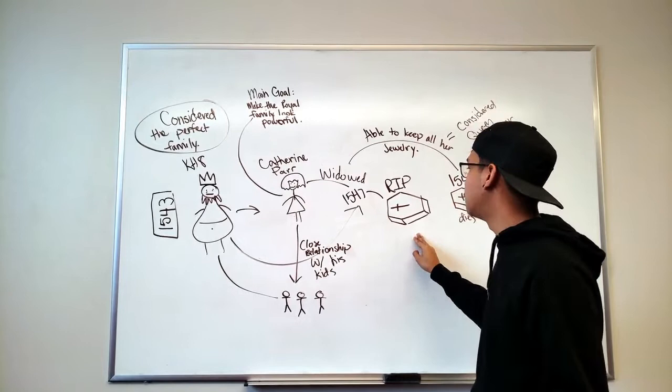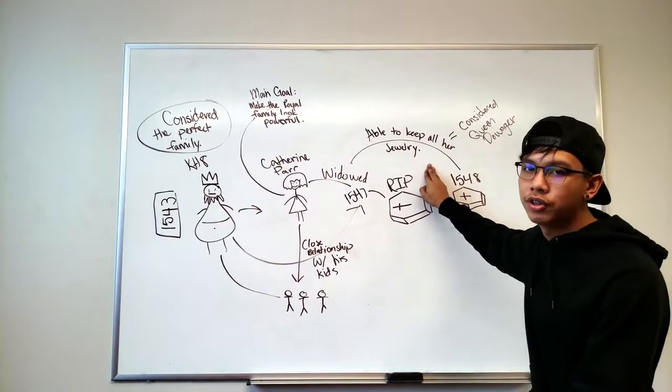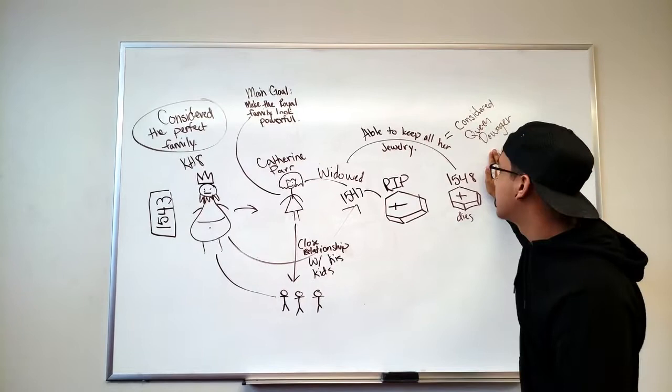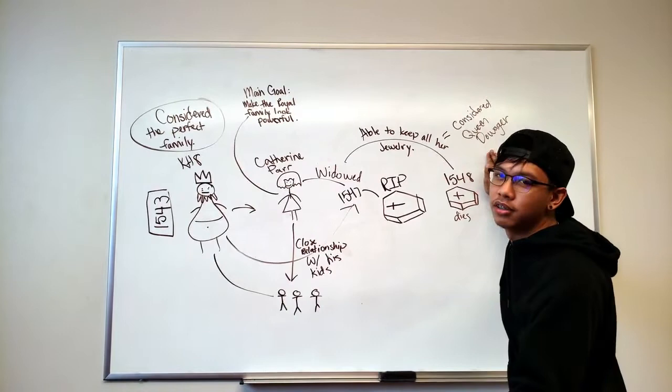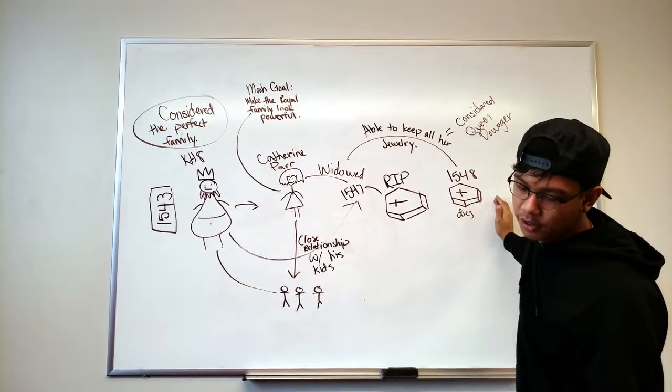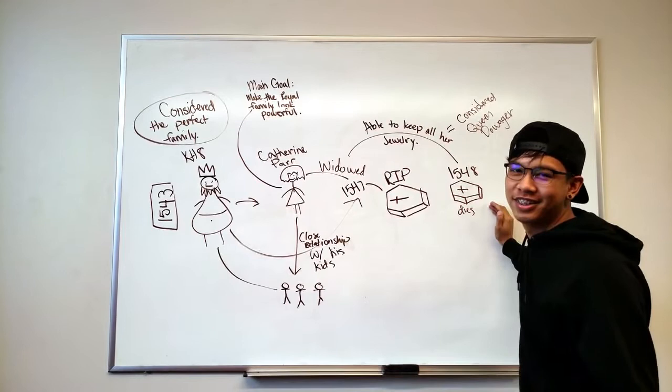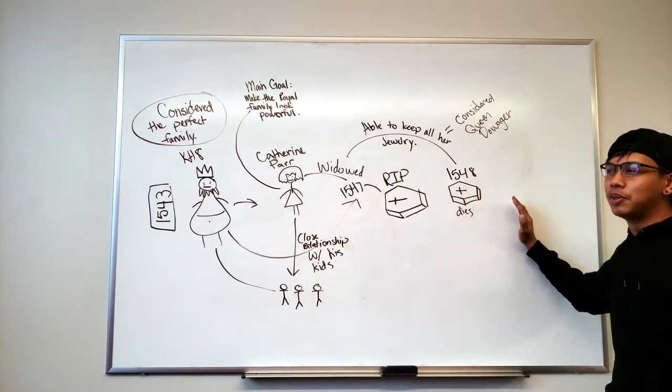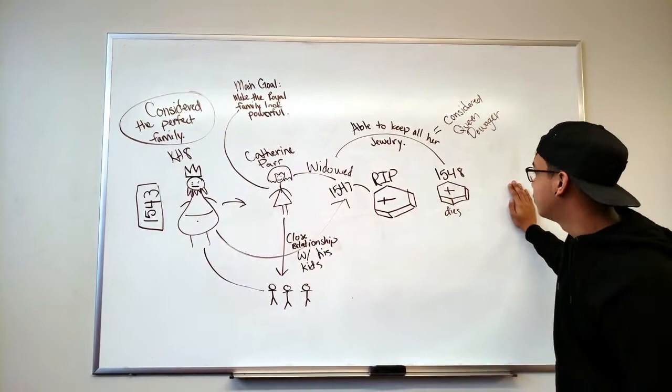In 1547, sadly, King Henry died, and she became a widow. But what was neat is that she was able to keep all of her jewelry. She was considered the Queen Dowager, which means she was the king's widow and she's powerful. And one year later, she actually married her last husband, Thomas Seymour. And that was her last husband, but they were barely married. Then she died one year after this marriage. And the end.